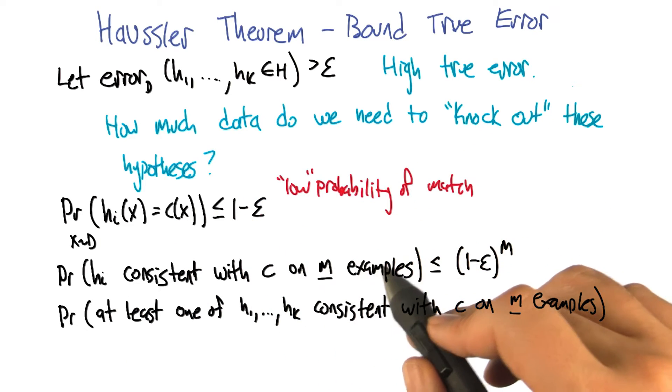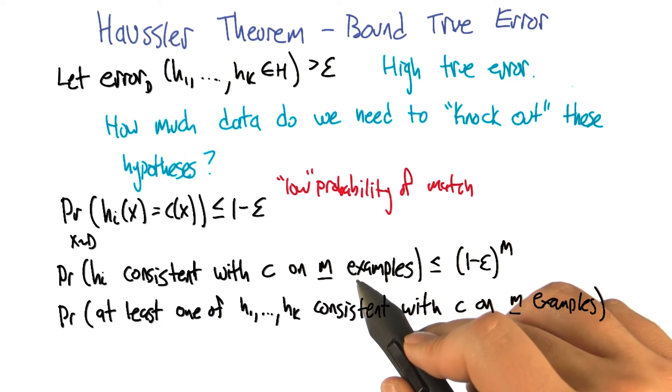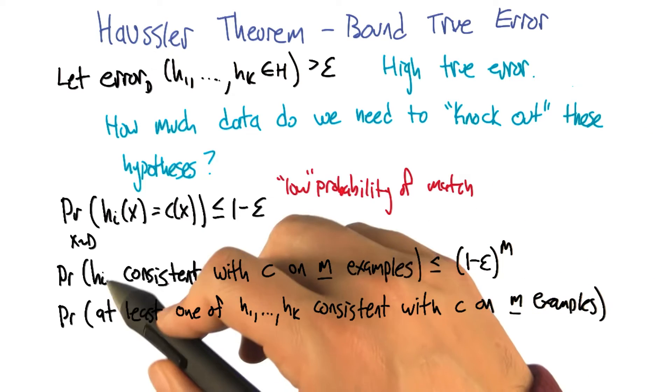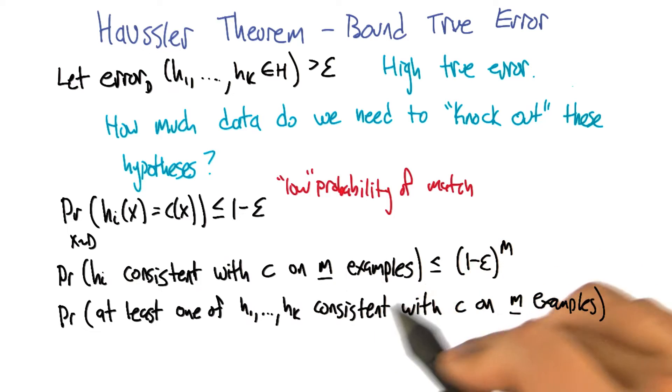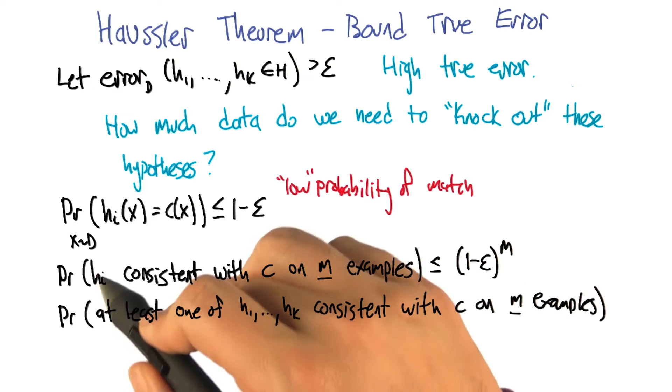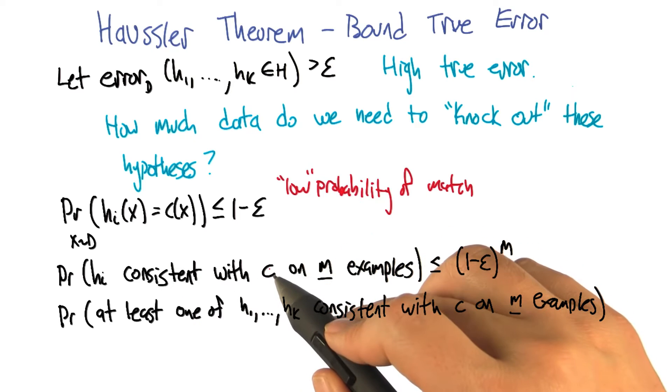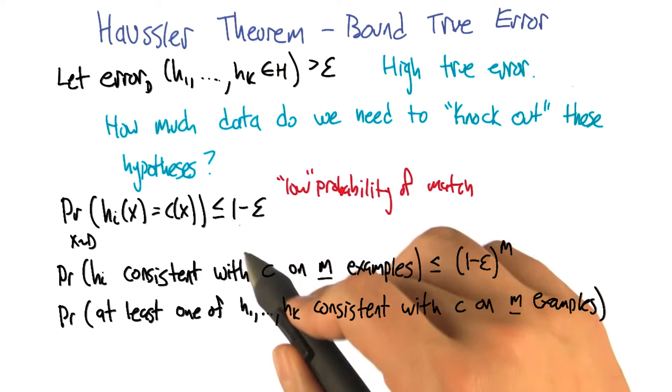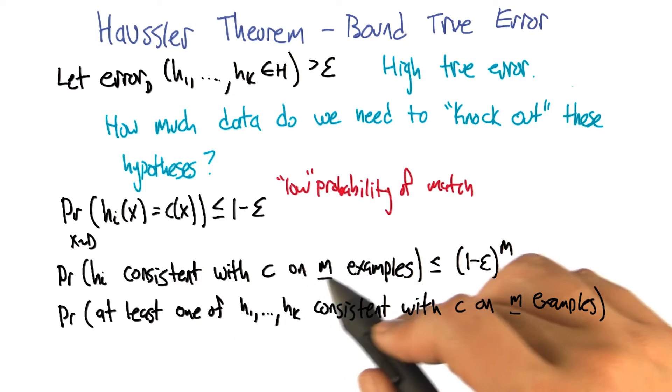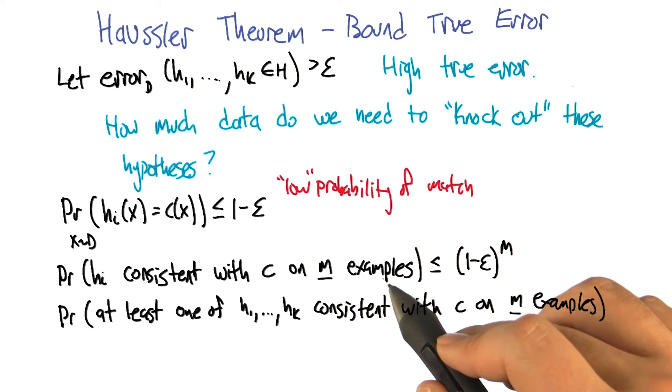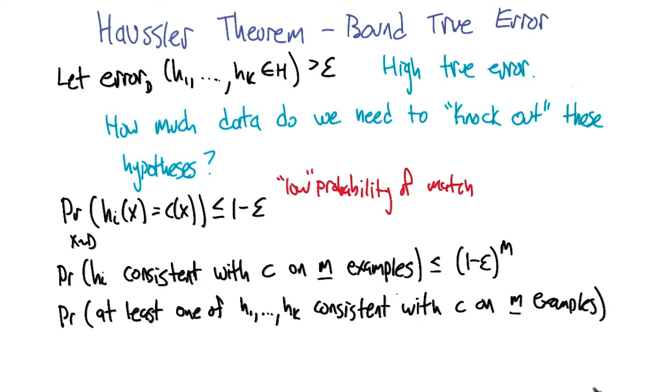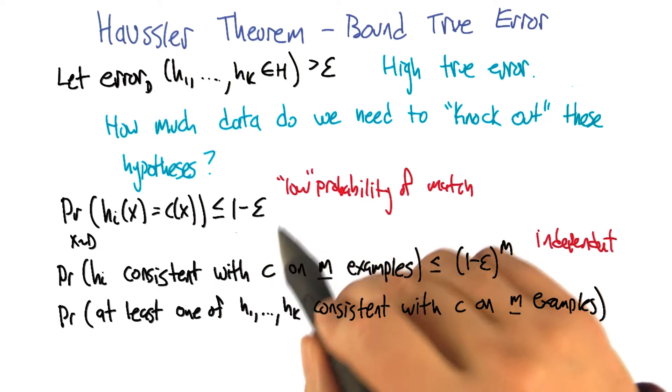For any given sample set, we've got a set of m examples. And what we'd like to know is, since we're trying to knock it out, what's the probability that even after we've drawn m examples, that this hypothesis, h_i, remains consistent with c, right? Even though it doesn't really match all that well, we've drawn m examples and it still looks like it matches. It's still in the version space. So the probability that that happens, if it were the case that everything was independent, is going to be (1 minus epsilon) raised to the m power, right? Because it's less than 1 minus epsilon to be wrong once.